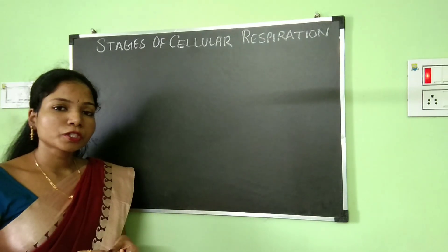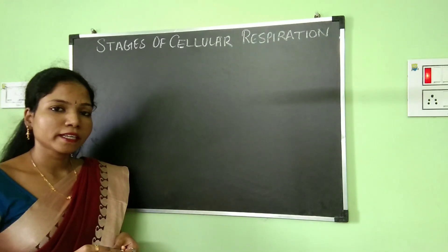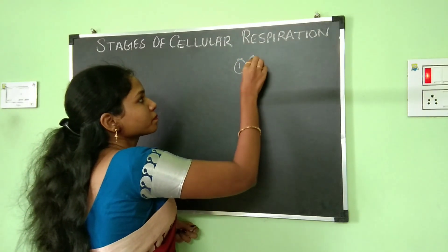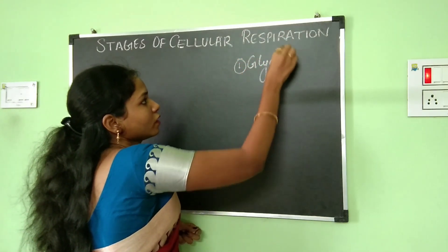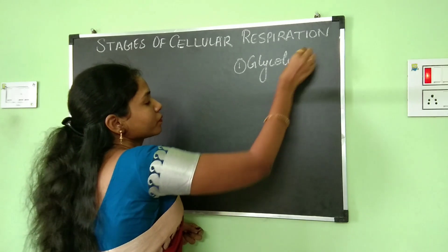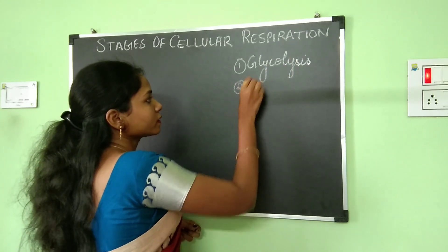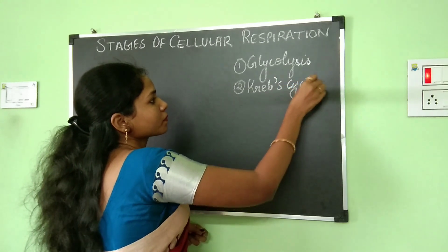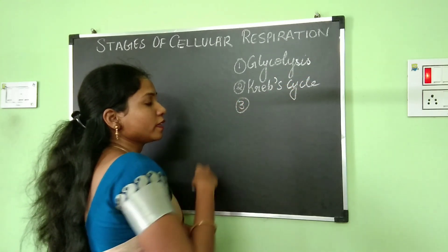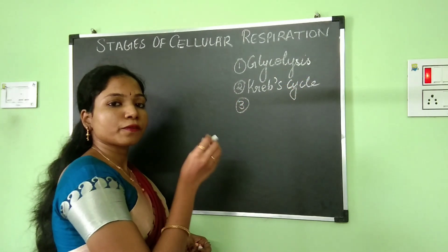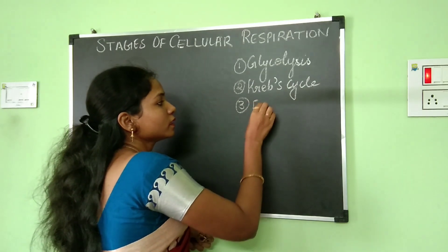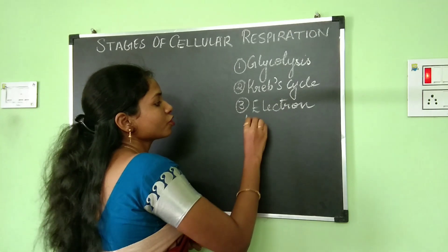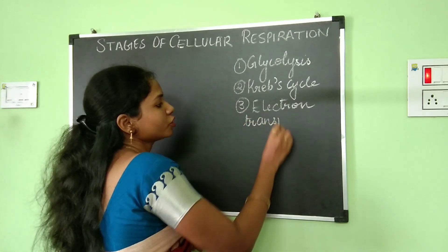There are three stages in the process of cellular respiration. The first one is glycolysis. The second is the prep cycle. And the third and most important stage of cellular respiration is the electron transport chain.